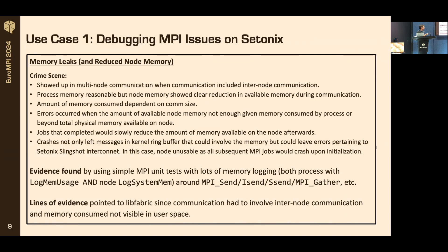I was looking at MPI logging of memory and node memory - literally what does the node think is available, and what are all the processes consuming in terms of memory. If you generated enough messages across nodes, you'd suddenly notice the memory available on the node would be consumed at a higher rate than predicted and would stay elevated. That turned out to be memory leaks in the communication library - UCX and OFI had these issues. Without this high-level logging dive, it would have been much harder for Cray to triage.